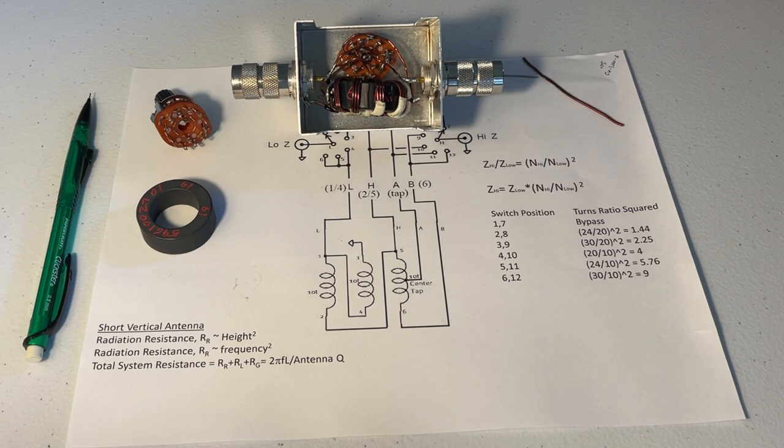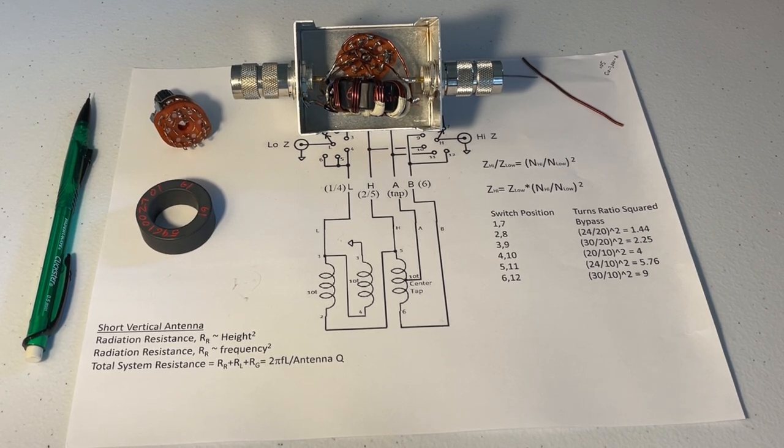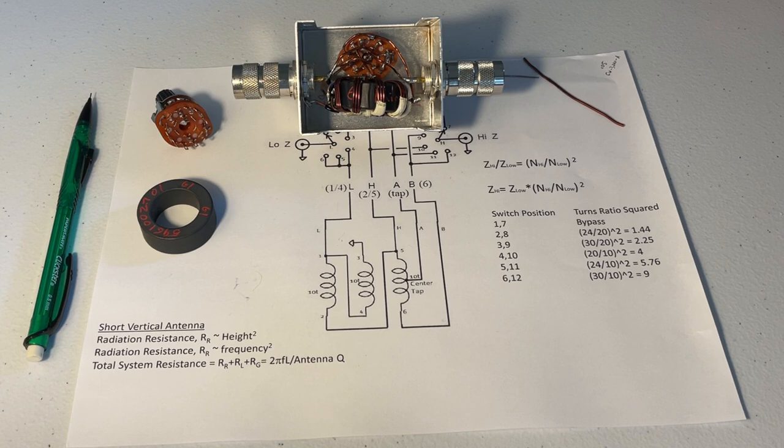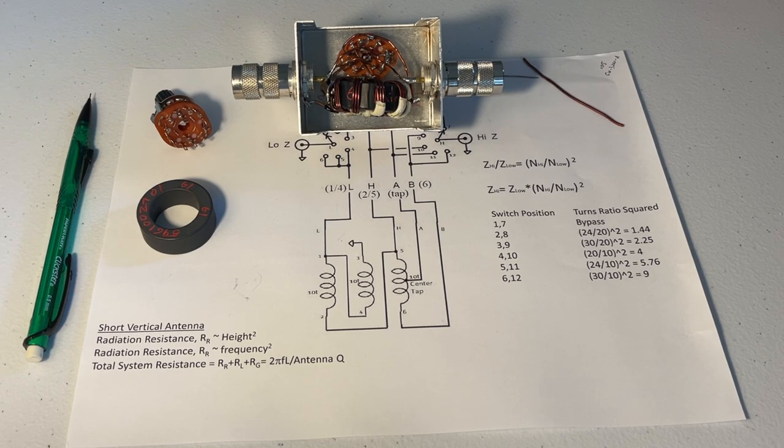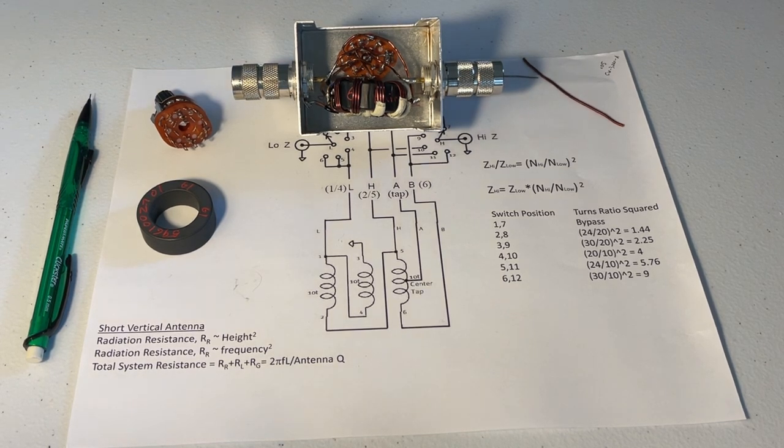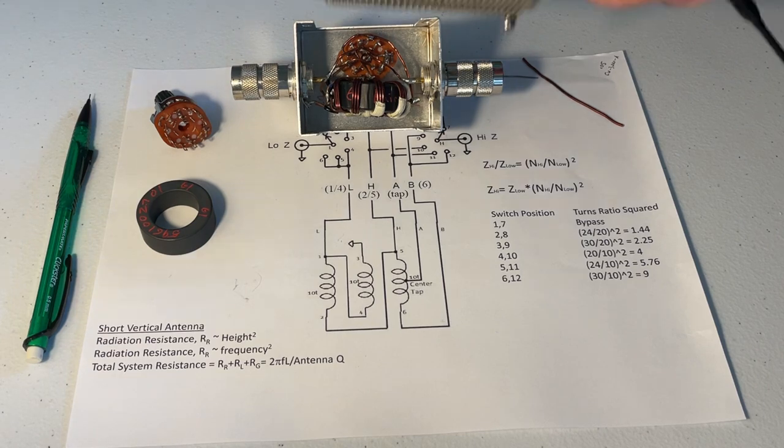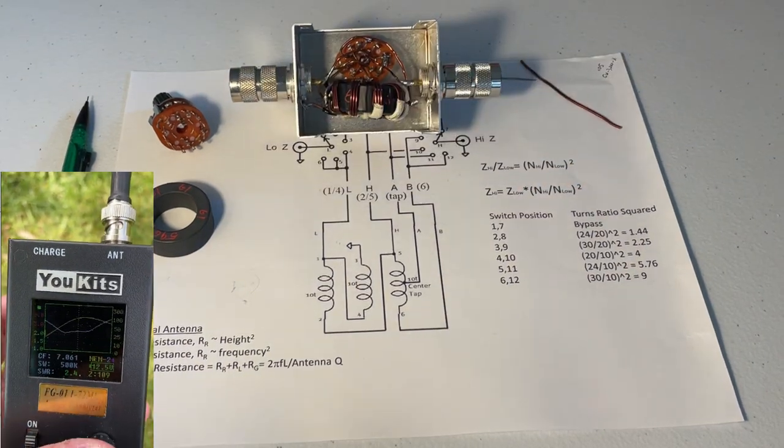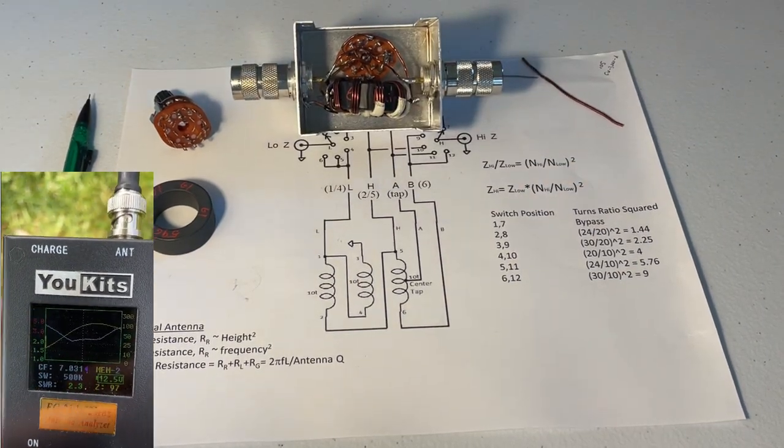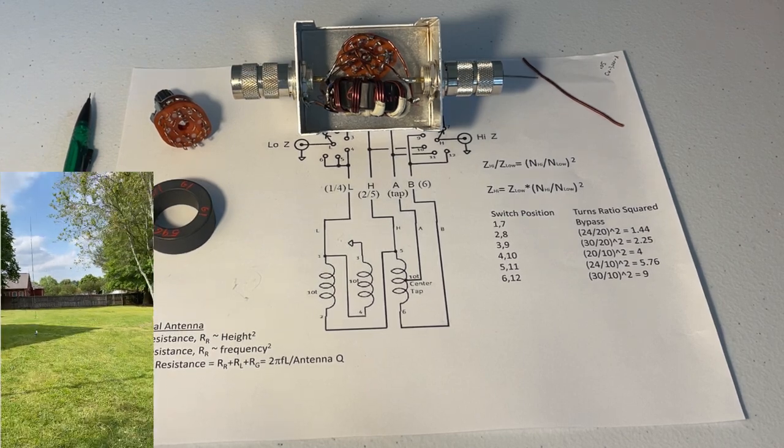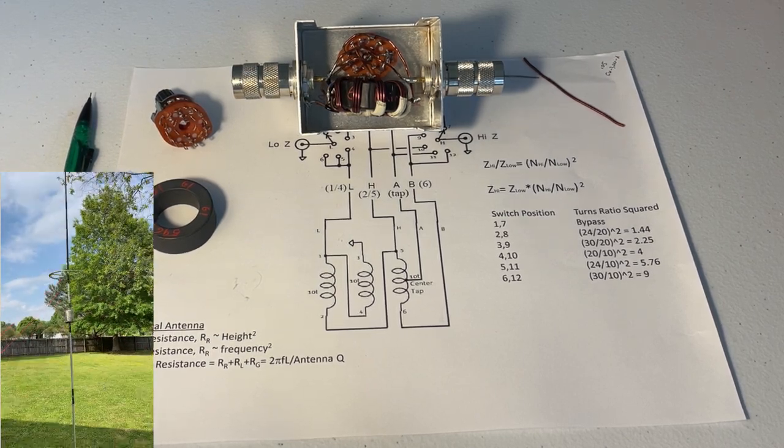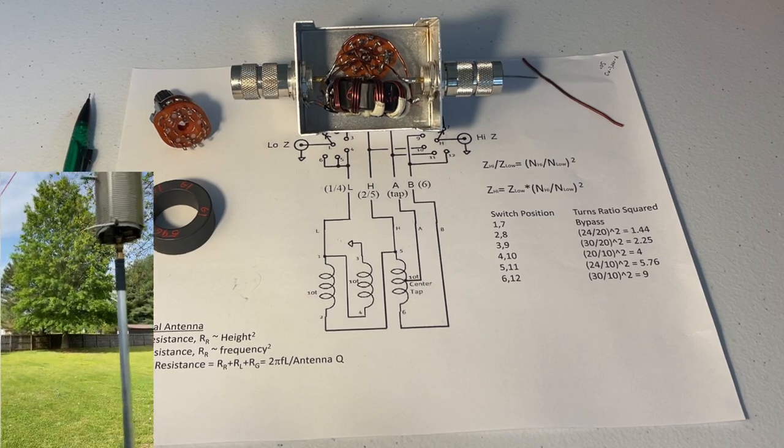I use a short about 16 to 15 foot high vertical antenna ground mounted with about nine radials. It's center loaded with a coil and I can load it from 40 meters up to 20, and then anything above 20 I don't need any loading at all.